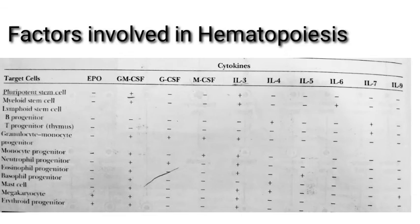The regulation of blood cell production is not only a function of increase or decrease in production of various growth factors, but also a function of the presence of receptors on the progenitor cells for these stimulatory or inhibitory factors. Generally, the more receptors present on the cell membrane of these progenitor cells, the more likely they are to be stimulated. This is the overview of the regulation of hematopoiesis.